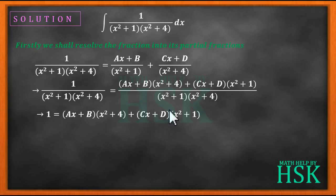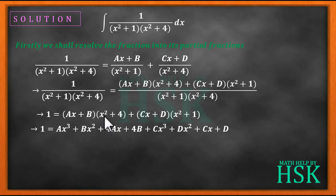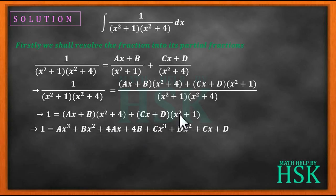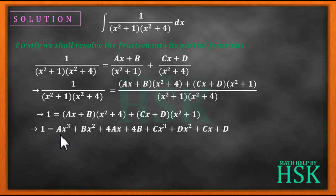We multiply the terms and separate them by the same power. Taking the first bracket: x² gives ax³ + bx², and 4 gives 4ax + 4b. For the second bracket: x² gives cx³ + dx², and 1 gives cx + d.